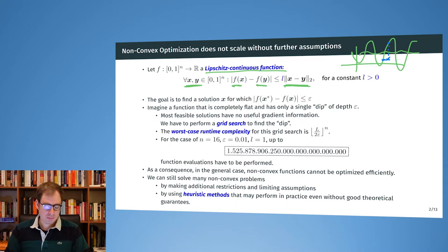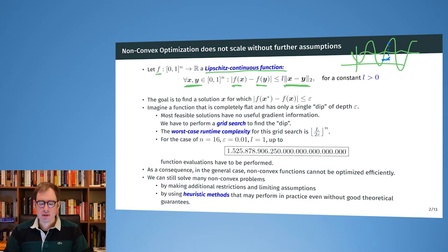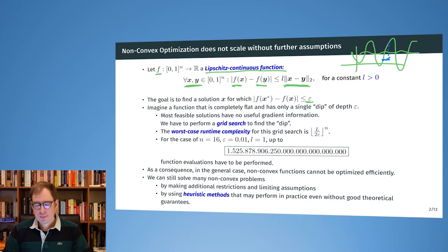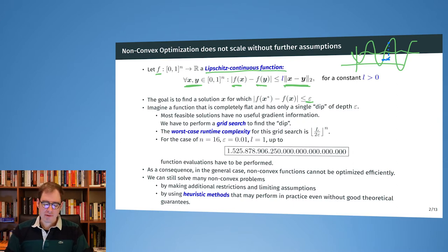Now assume we have a non-convex function at hand. Our f is Lipschitz continuous but non-convex, and we try to find a solution closer to the optimizer than some very small epsilon — the remaining error we allow. The question is: how often would we have to evaluate f if we did a grid search to be sure our solution is within epsilon of the optimizer?